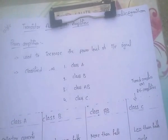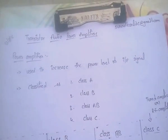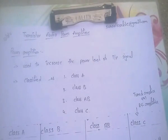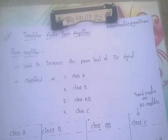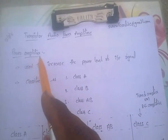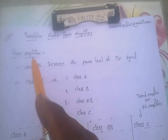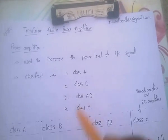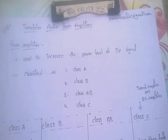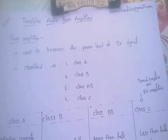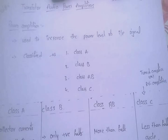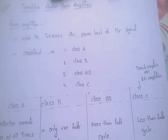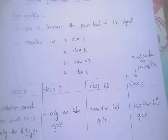The next topic is Transistor Audio Power Amplifiers. An amplifier strengthens a weak signal. A power amplifier is used to increase the power level of the input signal. Power amplifiers are classified as Class A, Class B, Class AB, and Class C.